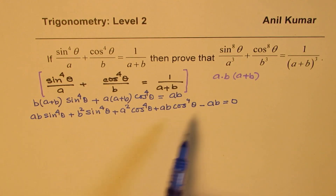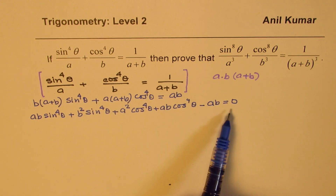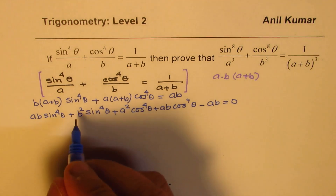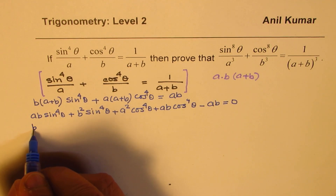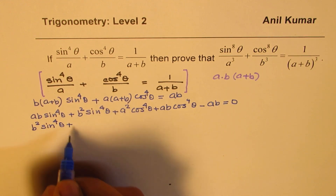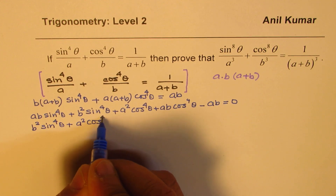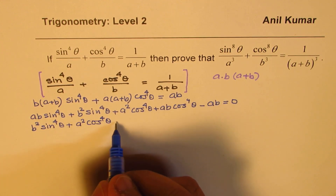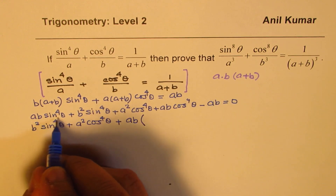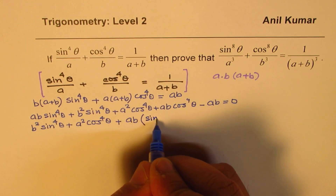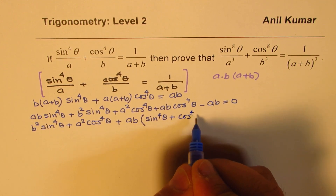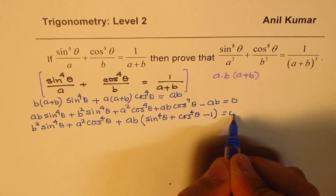Now here with ab we have got three terms. Let's combine them and keep the a²b² terms together. So we'll rearrange this, writing it as b²·sin⁴θ plus a²·cos⁴θ, and ab can be taken as common from the remaining terms: sine to the power of 4 theta plus cos to the power of 4 theta minus 1, equals to 0.